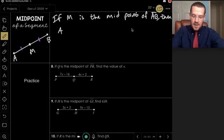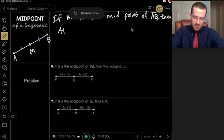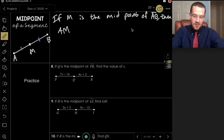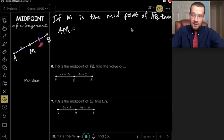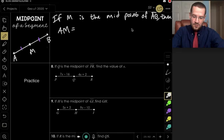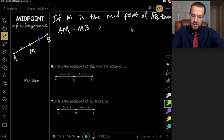So that AM, this segment here, the measure of this segment will be equal to the measure of this segment MB on the other side. So these two measurements will be equal, and what we learned also, that the two segments, if their measures are equal, then the segments are congruent.